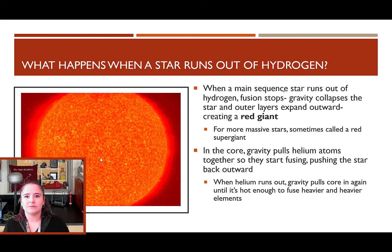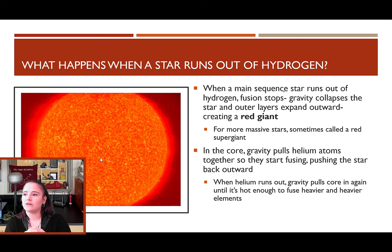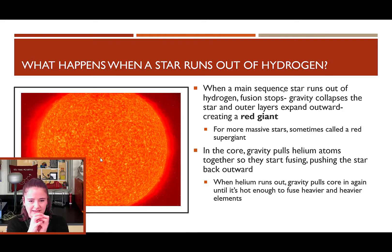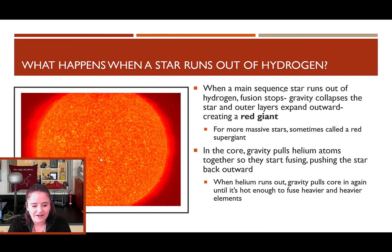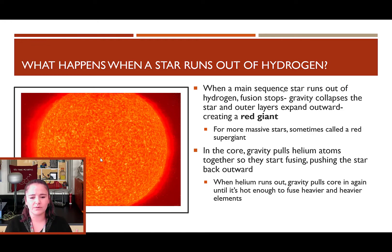The star expands outwards because fusing helium and heavier atoms doesn't create quite as much energy as hydrogen fusion. In the core itself, gravity is still acting. When hydrogen runs out, gravity pulls the core together and squishes helium atoms until they start fusing, creating heavier elements. When those run out, gravity wins again and pulls the star in, fusing heavier elements like carbon, nitrogen, and oxygen. This cycle of fusion energy and gravity goes back and forth repeatedly.